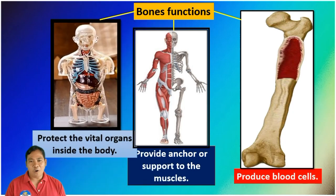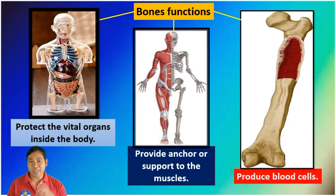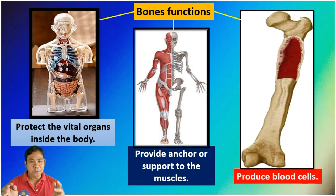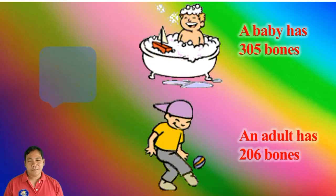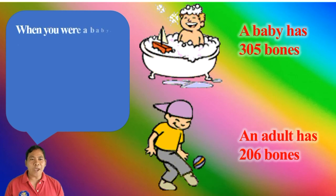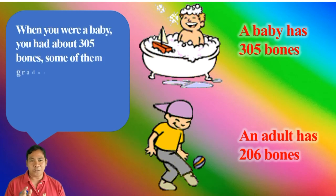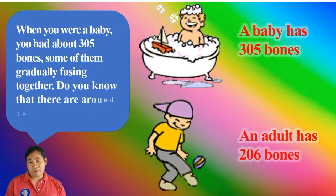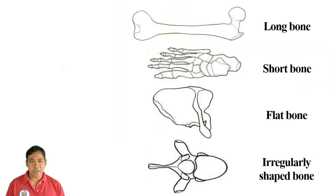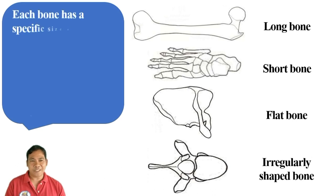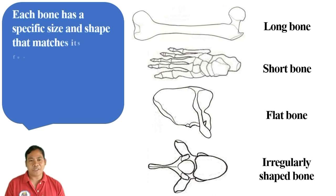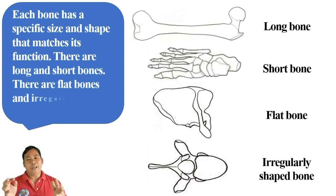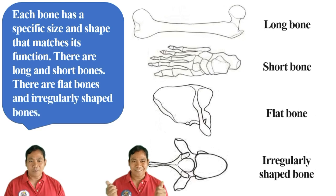Bones have three main functions: they protect vital organs inside the body; they provide anchor or support to the muscles; and they produce blood cells. When you were a baby, you had about 305 bones, some of which gradually fused together. There are around 206 bones in the adult human body. There are long and short bones, flat bones, and irregularly shaped bones.